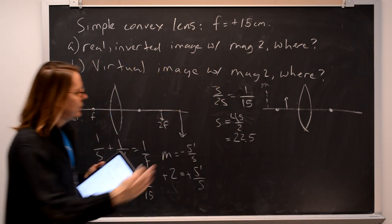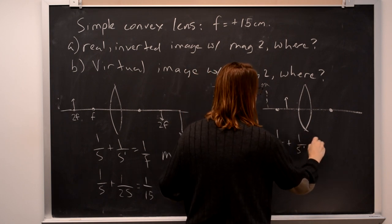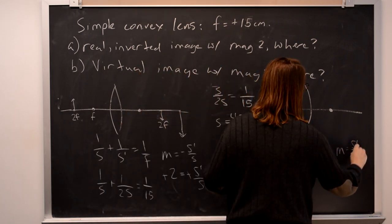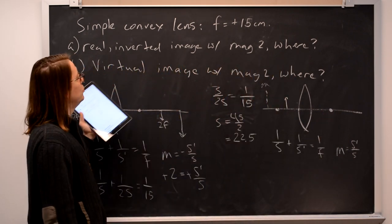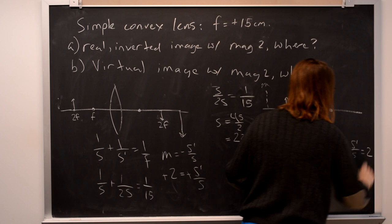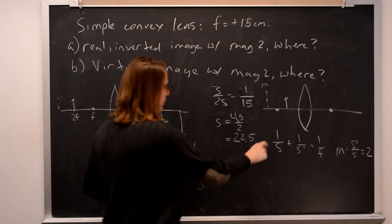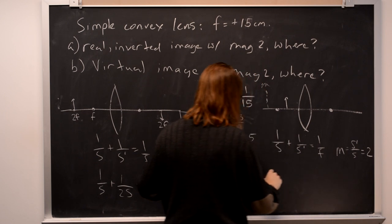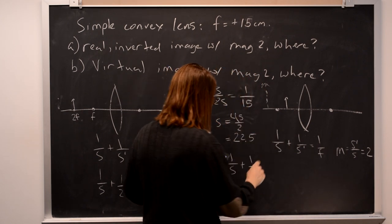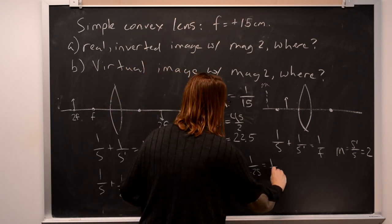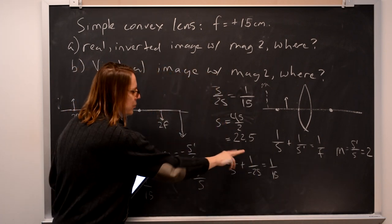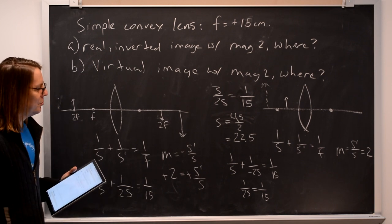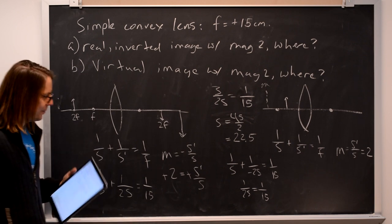Basically all we need to say. So these two formulas are the same though. 1 over the object distance plus 1 over the image distance is 1 over f. And the magnification now needs to be s prime over s, image over object, but now it's equal to positive 2. Positive, upright, virtual image. So we're going to do the same thing. 1 over s plus 1 over s prime, which is now negative 2s, equals 1 over 15. So 2 over 2 minus 1 over 2 is 1 over 2s equals 1 over 15. So that one I won't do as poorly on the algebra. That is 7 and a half. S equals 7.5.